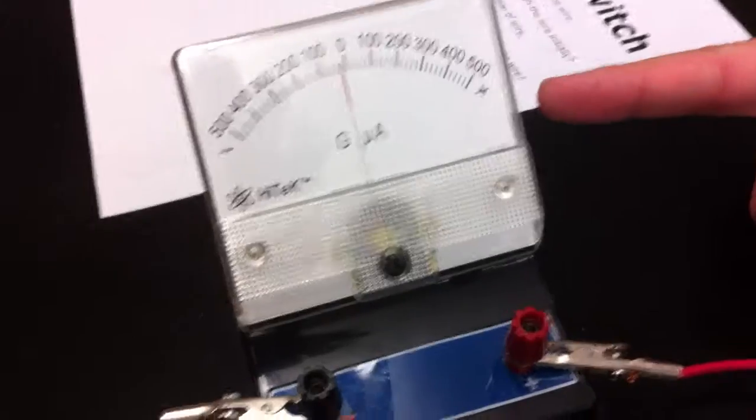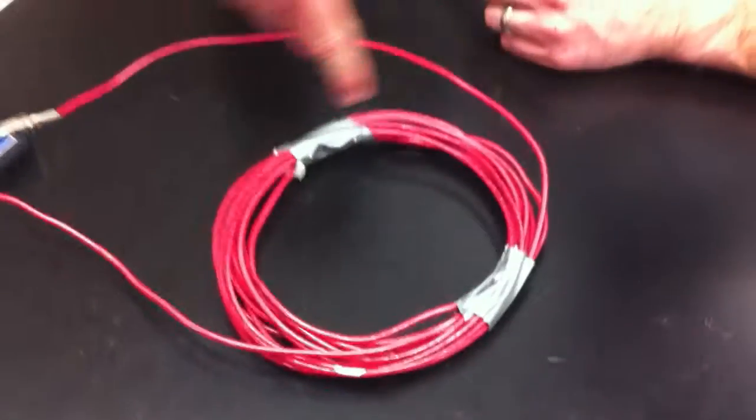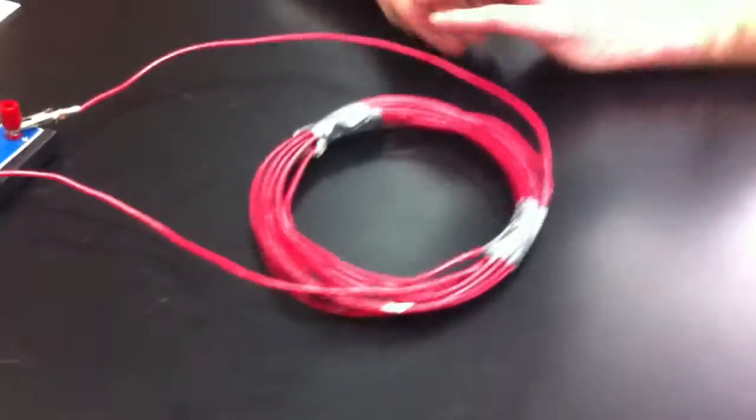Alright guys, we have station 7 here with a galvanometer which measures how much electricity is going through this red coil. Right now if you look, it's pretty much on zero - there's no electricity going through this coil.